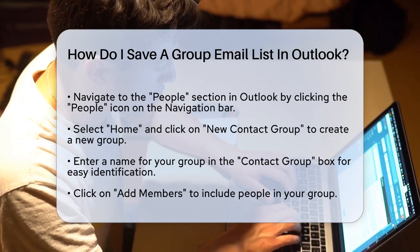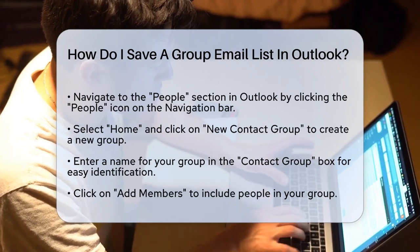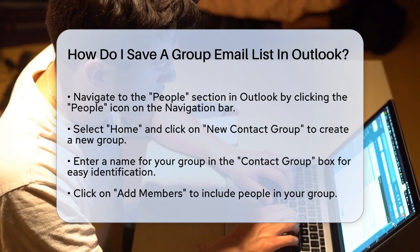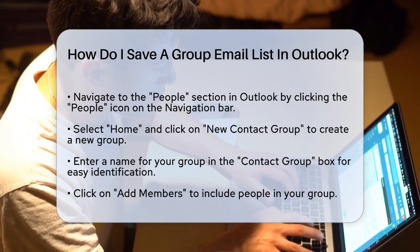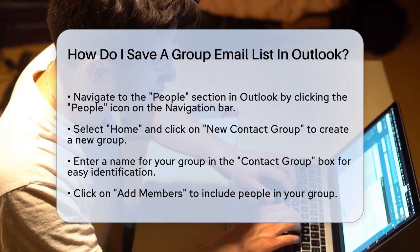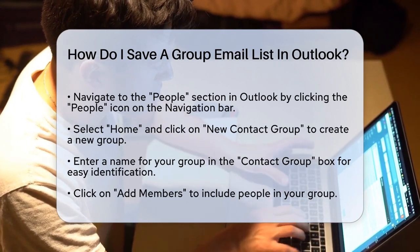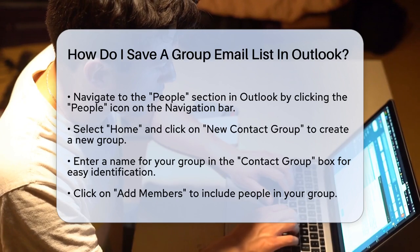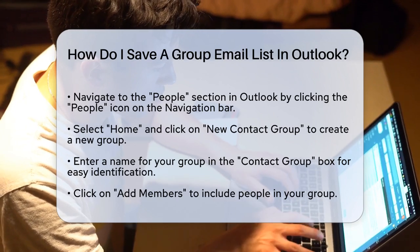Once you're there, select Home and then click on New Contact Group. Next, you'll need to give your group a name. Type in the name you want for your group in the Contact Group box.